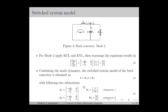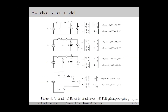If sigma is 1, then mode 1 is active and the dynamics are defined by subsystem 1. If sigma is 2, then mode 2 is active and the dynamics are decided by subsystem 2. In a similar way, we can obtain the switcher system model of other DC to DC converters such as boost converter, buck-boost converter, full-bridge converter, etc., for which the circuit diagrams and subsystems are given in figure 5.